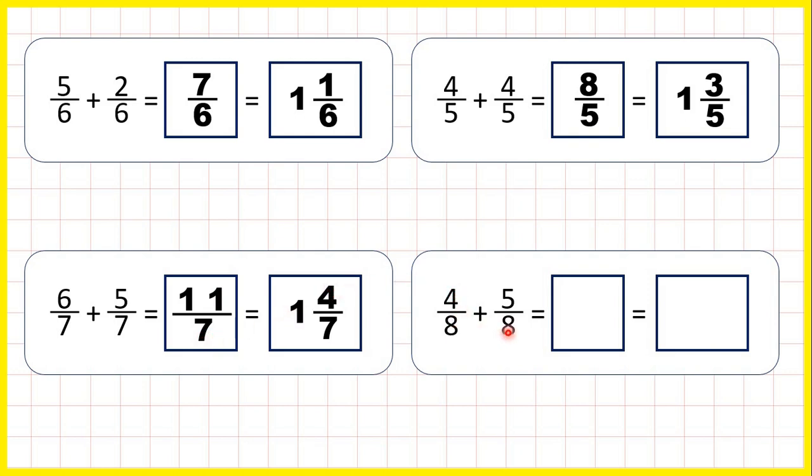Now, our denominators are the same, so the denominator stays the same in the answer, and 4 plus 5 is 9, so 9 eighths is our improper fraction.